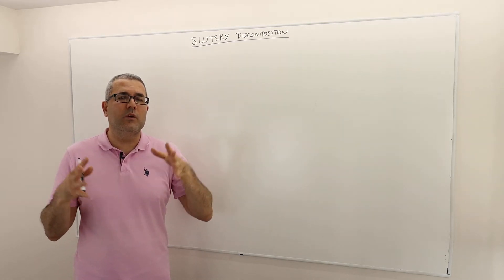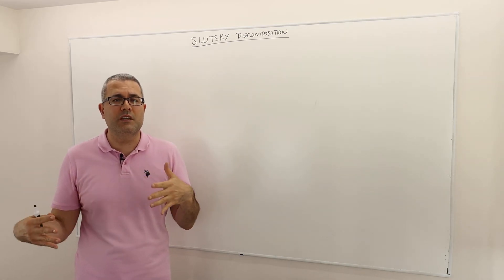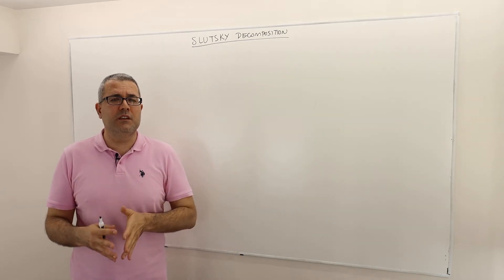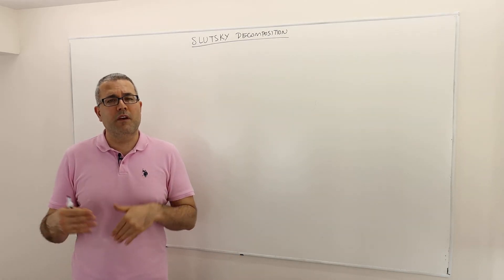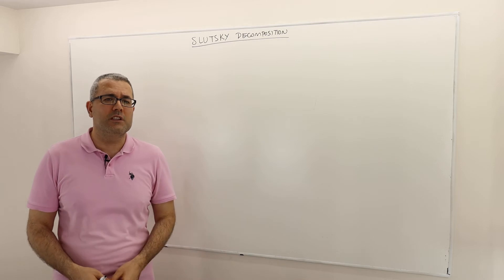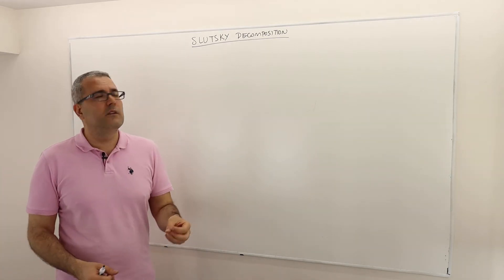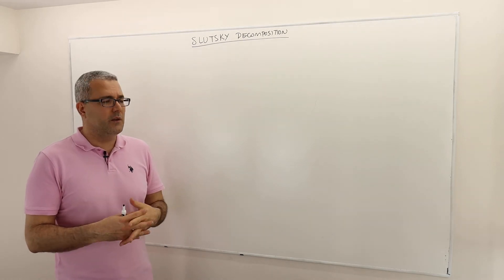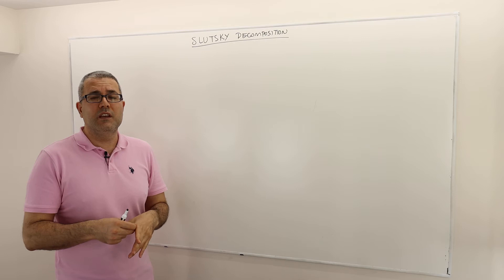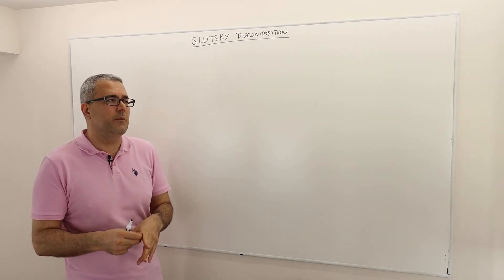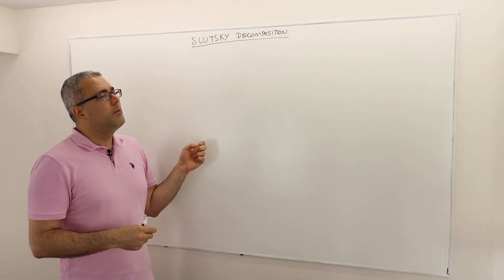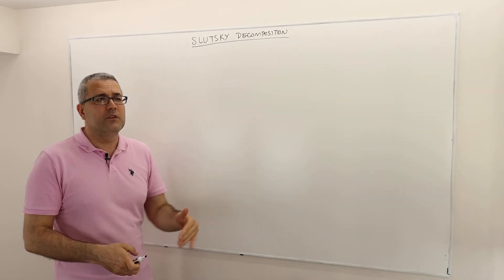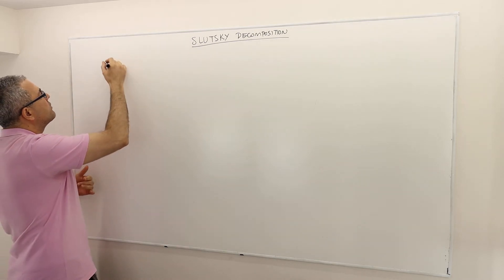The question is: formally and mathematically, how can we distinguish these two effects? If you have a 10% price decline causing a 15% increase in demand, how much is due to the income effect and how much is due to the substitution effect? There are two ways: Slutsky decomposition, which I'll explain in this episode, and the Hicksian decomposition, which I'll hopefully cover in the next episode. Let me first give you the formal theory and then do an example.